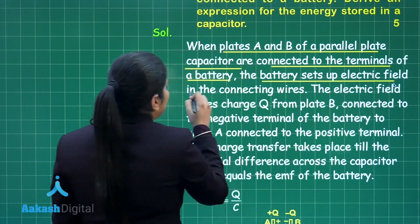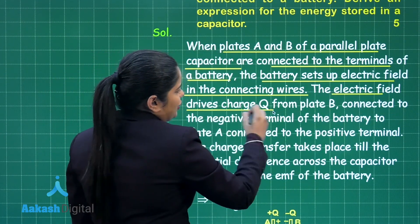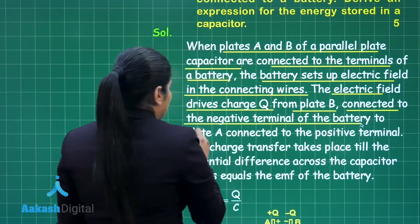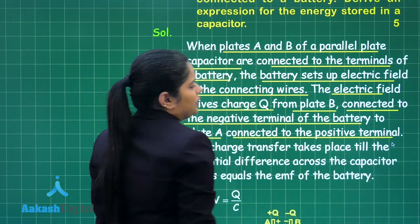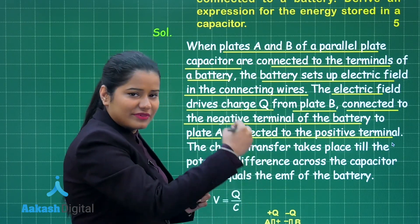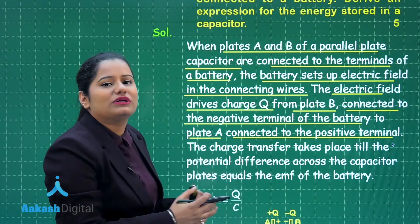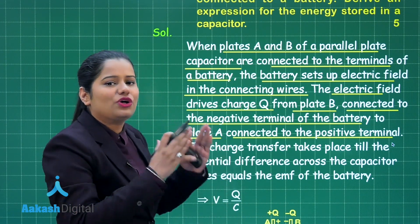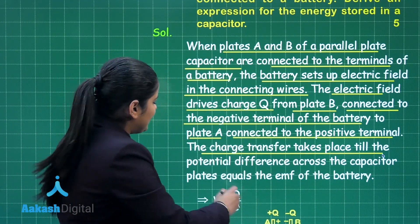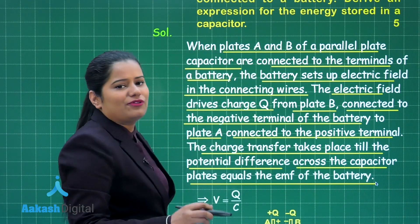The battery sets up an electric field in the connecting wires. The electric field drives charge Q from plate B, connected to the negative terminal of the battery, to plate A, connected to the positive terminal of the battery. So the battery drives the charge from the plate connected to the negative terminal to the plate connected to the positive terminal, and this is how the charging of the capacitor takes place. The charge transfer will take place till the potential difference across the capacitor becomes equal to the EMF of the battery.